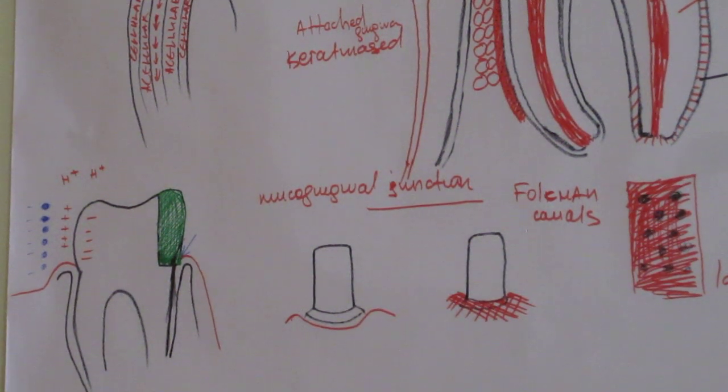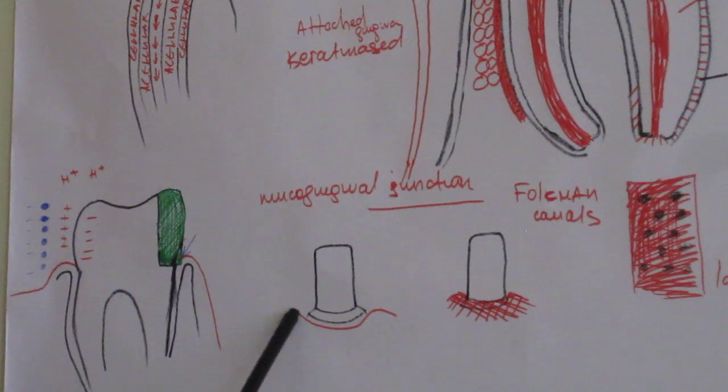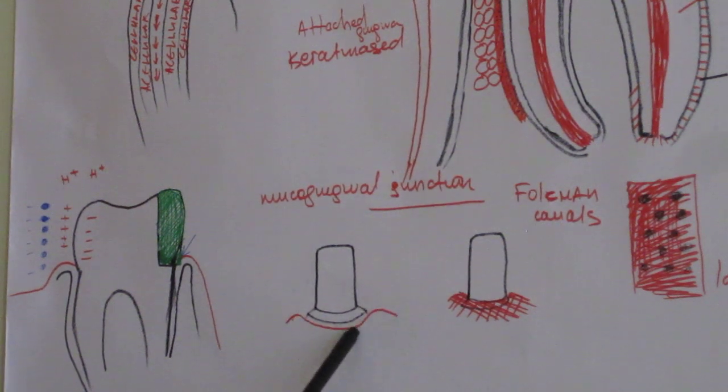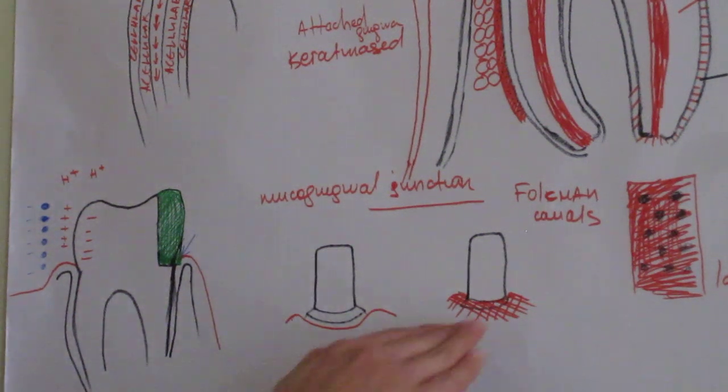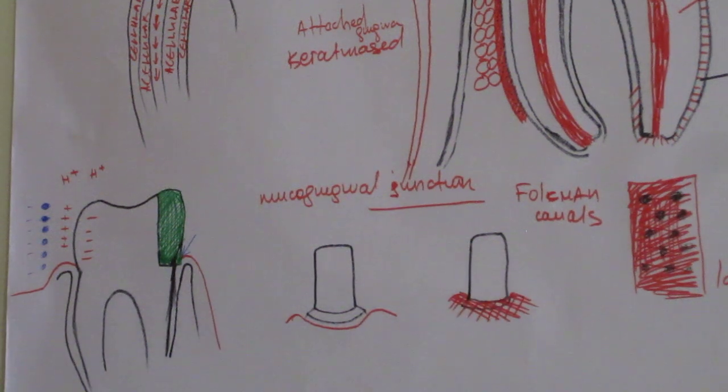So the other iatrogenic factors are preparations for crowns. Usually preparation for crowns is supragingival preparation where the border of the preparation is above the free gingival margin. Then it has more protective function. And when there is subgingival preparation, it is irritating the sulcus, the gingival sulcus all the time.